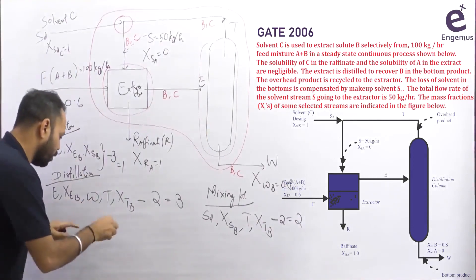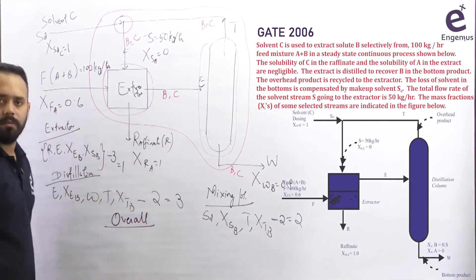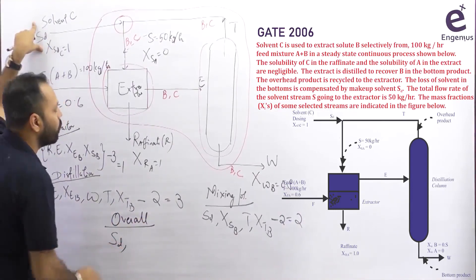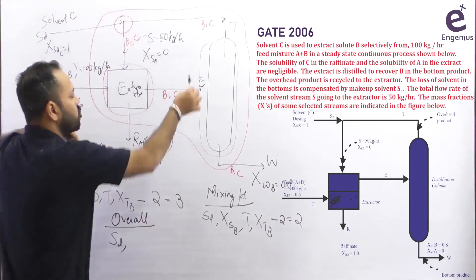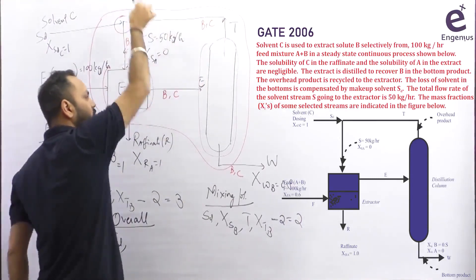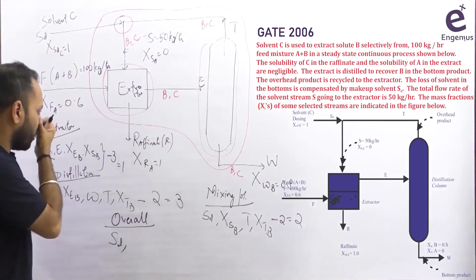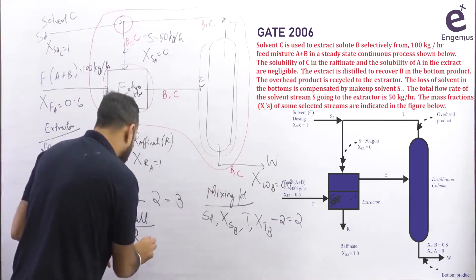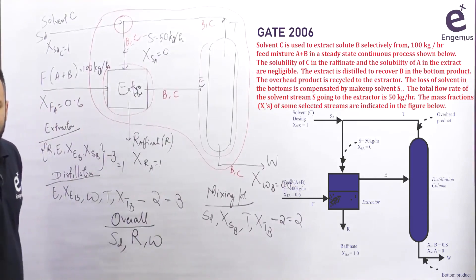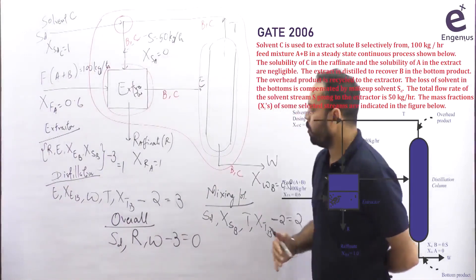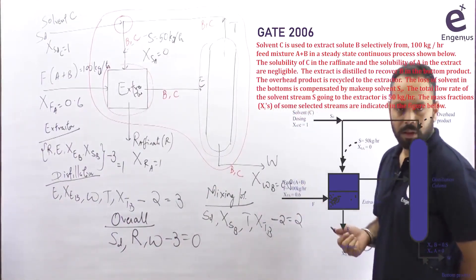Now talk about the overall system. The feed stream is completely known. SD is unknown. Stream T is not crossing the overall system boundary since it leaves the column and comes back — so it is not counted as an unknown. R is unknown, W is unknown. Three unknowns total. Three species crossing the overall boundary: A, B, and C — three equations. Degree of freedom equals zero. You must start with the overall system.